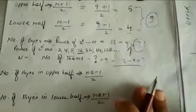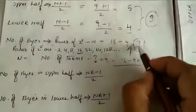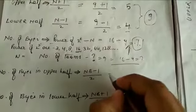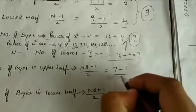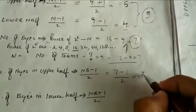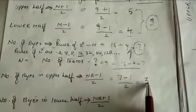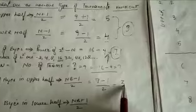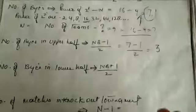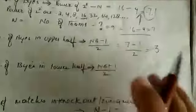Now the number of byes in the upper half: total byes are 7, so the formula is (7-1)/2 — that is 6 divided by 2 equals 3. In the upper half, we will have 3 byes. For the lower half, the formula is (7+1)/2 — that equals 4 byes. So lower half will have 4 byes.